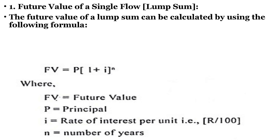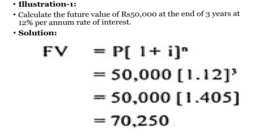The future value of a lump sum amount or a single cash flow can be calculated using the formula: FV = P × (1 + i)^N, where FV is future value, P is the principal amount deposited, i is the rate of interest, and N is the number of years for which we want to find out the future value. Let's learn the application of this formula by taking an example.